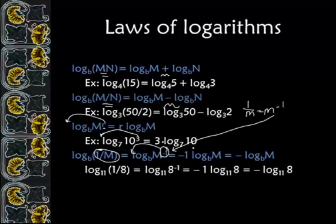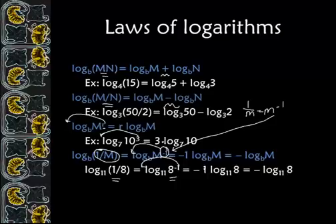Here's our example: we have 1 over 8, which is the same thing as 8 to the negative 1. We pull the negative 1 out front, which gives us negative 1 times log base 11 of 8, or we just say negative log base 11 of 8.